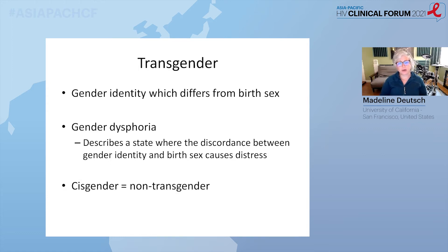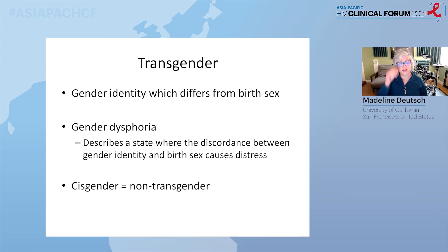One other term I want to define is cisgender. Many of us took organic chemistry and learned the cis and trans prefixes. Cis means same or next to in Latin, whereas trans means across. So if you are not transgender — meaning your gender identity and the sex you were assigned at birth are aligned — then you are cisgender.